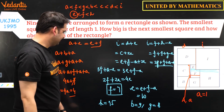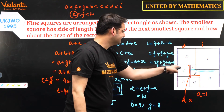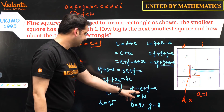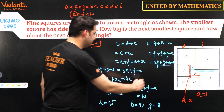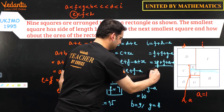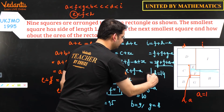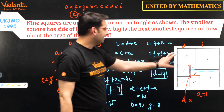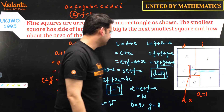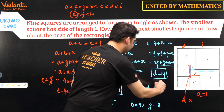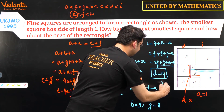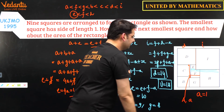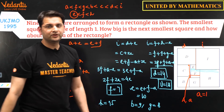We can also find i: i = d + e = 14 + 4 = 18. So i = 18.